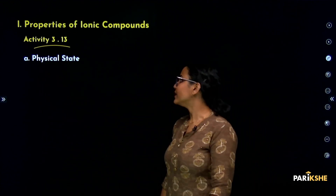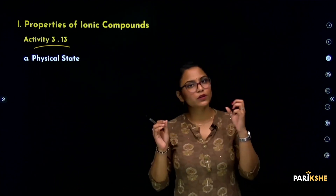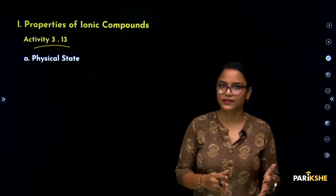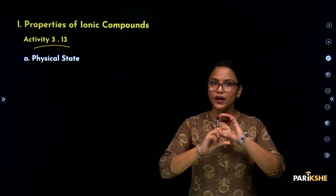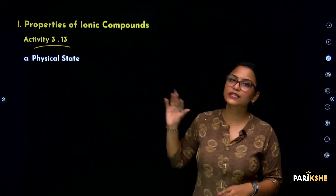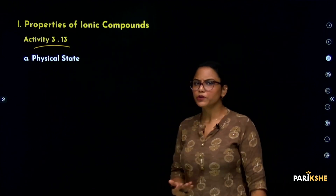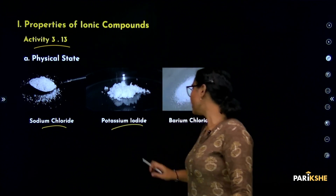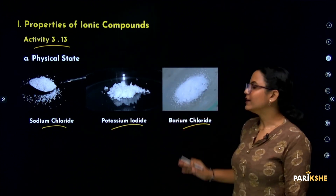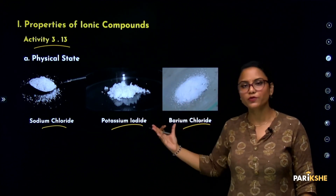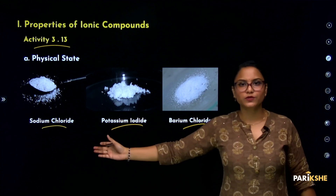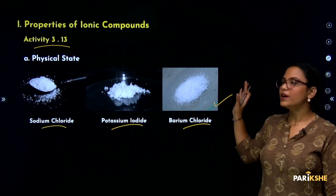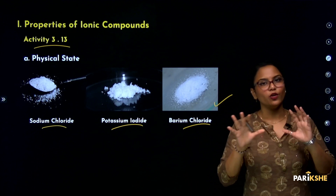We are going to study Activity 3.13. In this activity, the compounds used are sodium chloride, potassium iodide, and barium chloride. These ionic compounds can also be called salts. The physical state of these salts is solid. So, your first observation is: they are all solid in state.